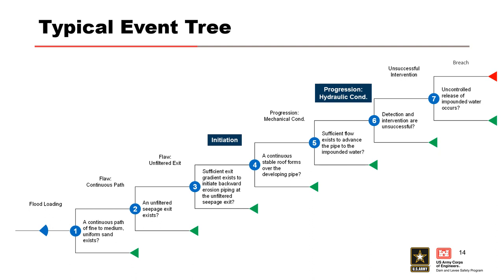As a reminder, here is the typical event tree for backward erosion piping. The flood-fighting efforts primarily affected the initiation and hydraulic condition for progression nodes within the tree. Typically, intervention is accounted for in the risk estimate through the unsuccessful intervention node. However, since this case history is an examination of past events, it is prudent to look at these nodes separately.